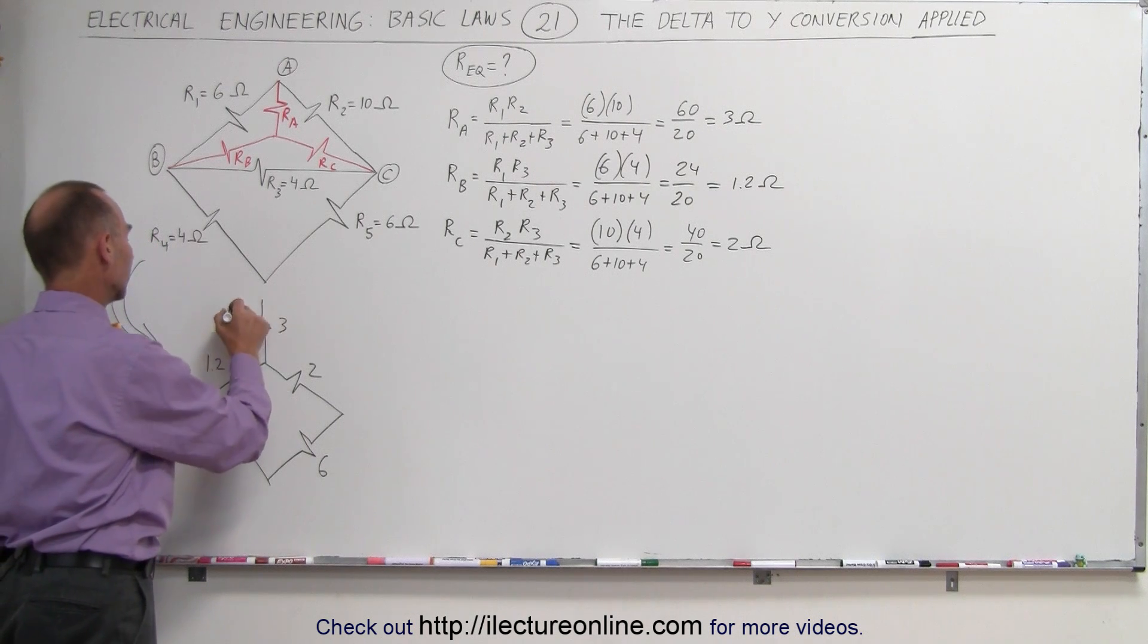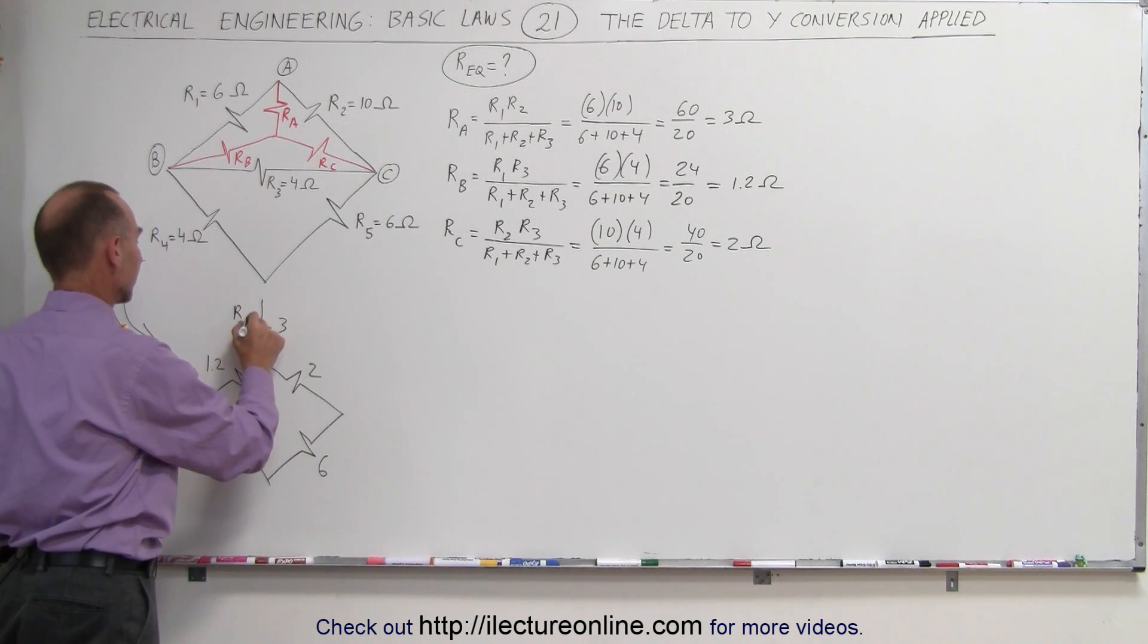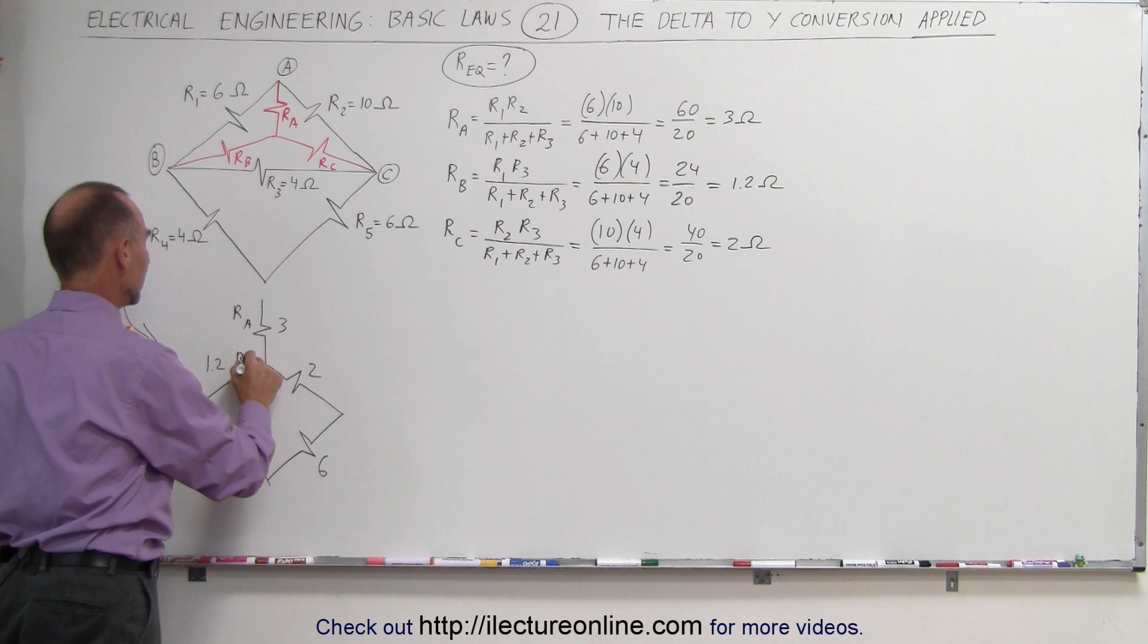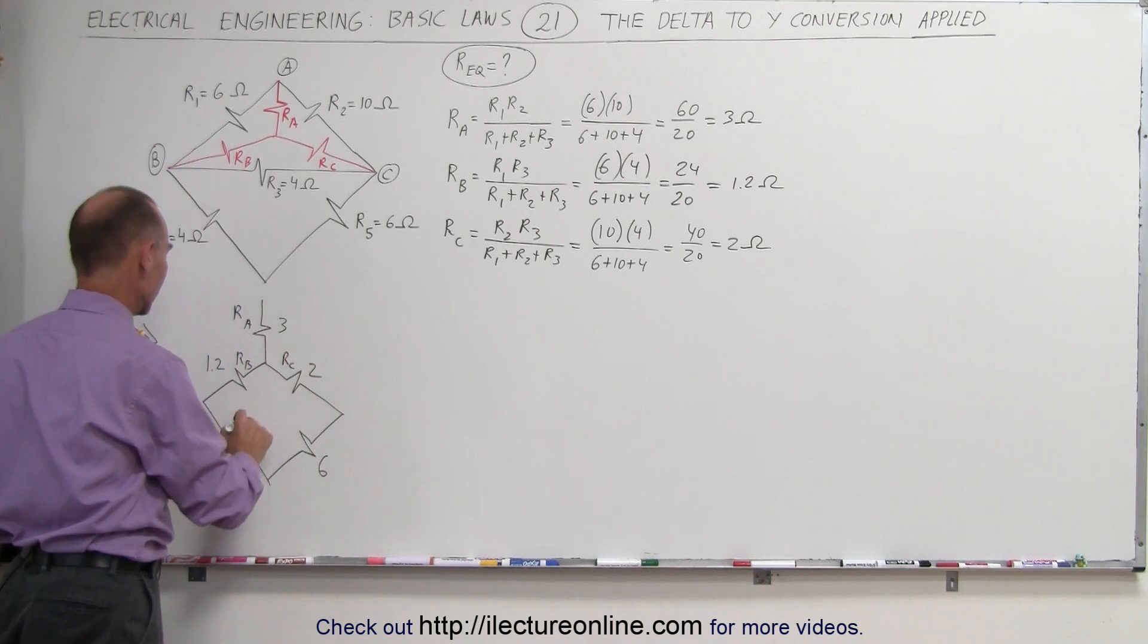Notice that I did not put any of the ohm values down or any of the R's. This is simply R3. I might as well do that. So this is R sub A. This is R sub B. This is R sub C. This is R sub 4. And this is R sub 5.